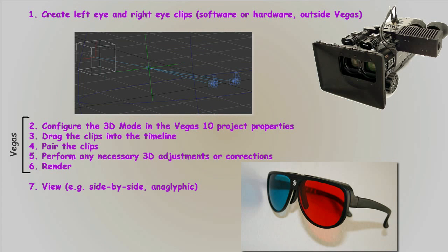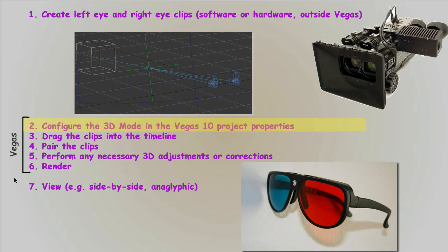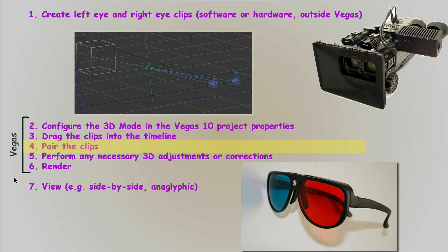Once you've created your left and right eye clips, you can combine them in Vegas. There are five basic steps: configuring the 3D mode in the project properties, dragging the clips into the timeline, pairing the clips, and performing any necessary 3D adjustments or corrections.